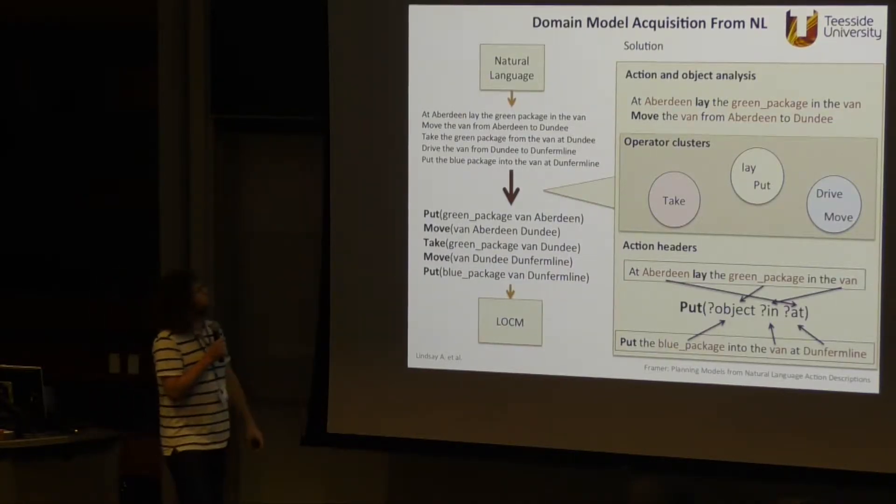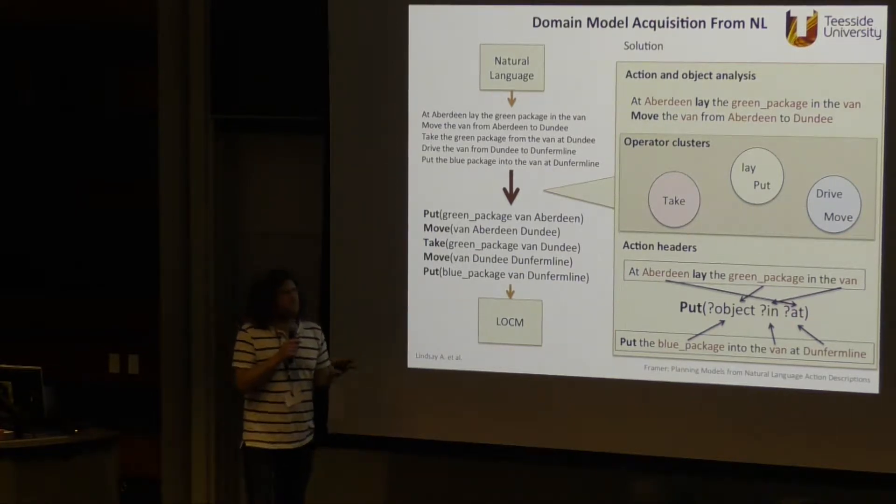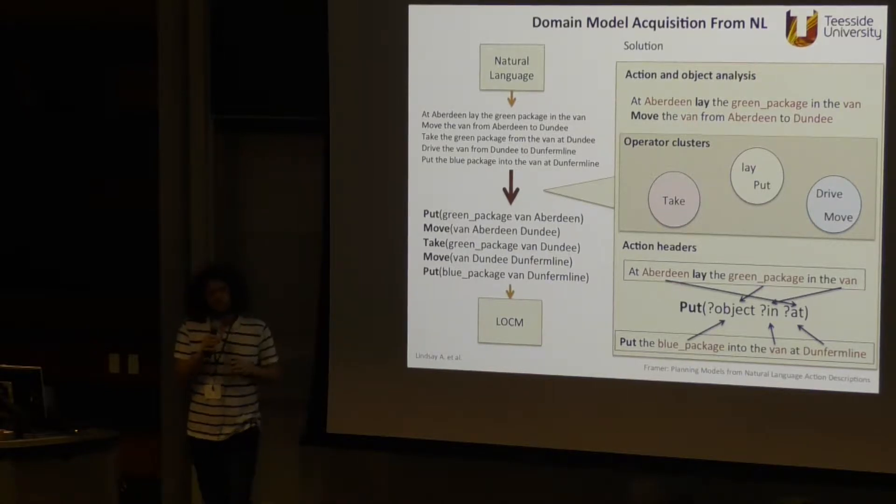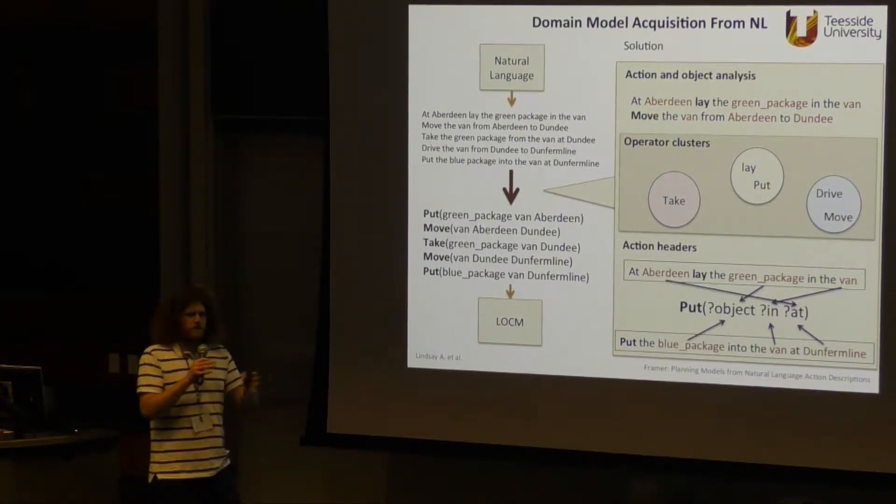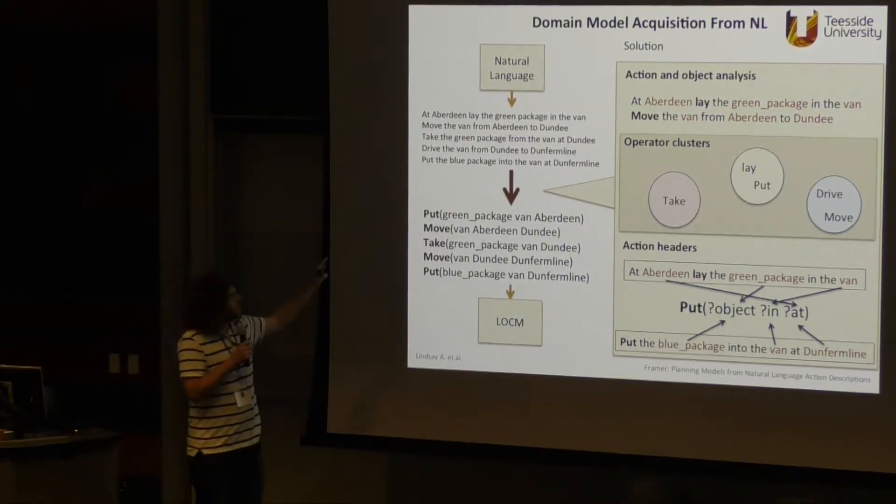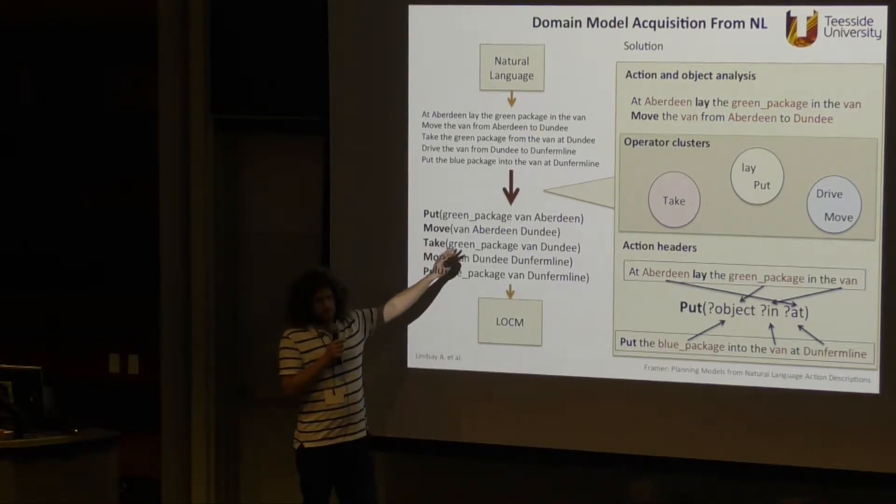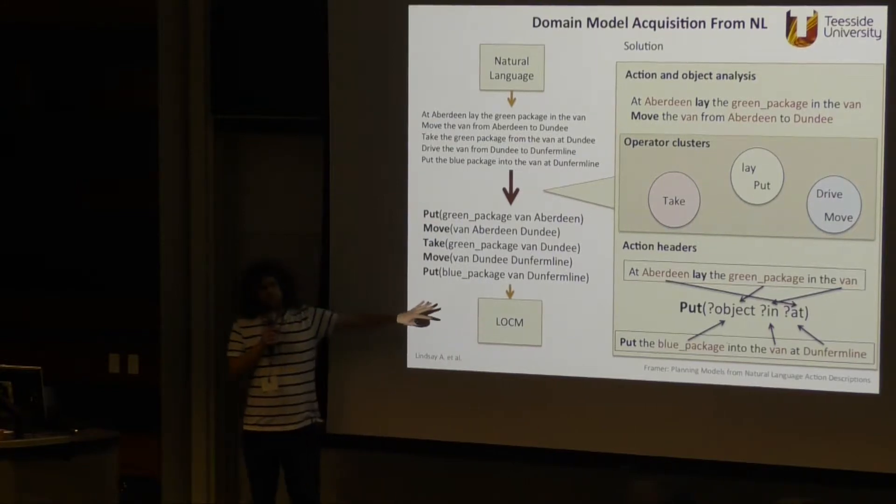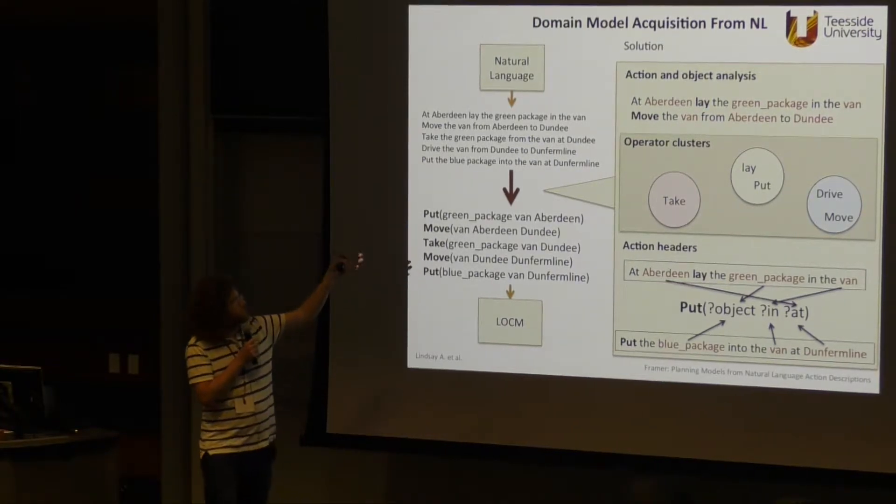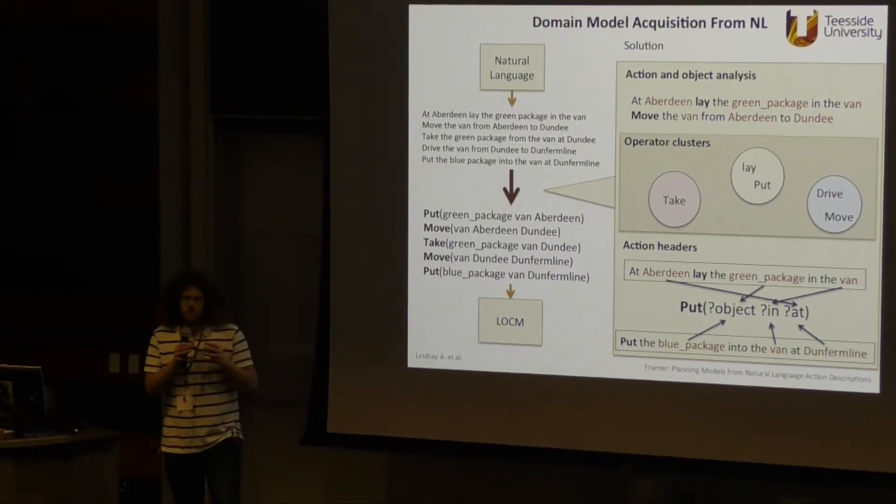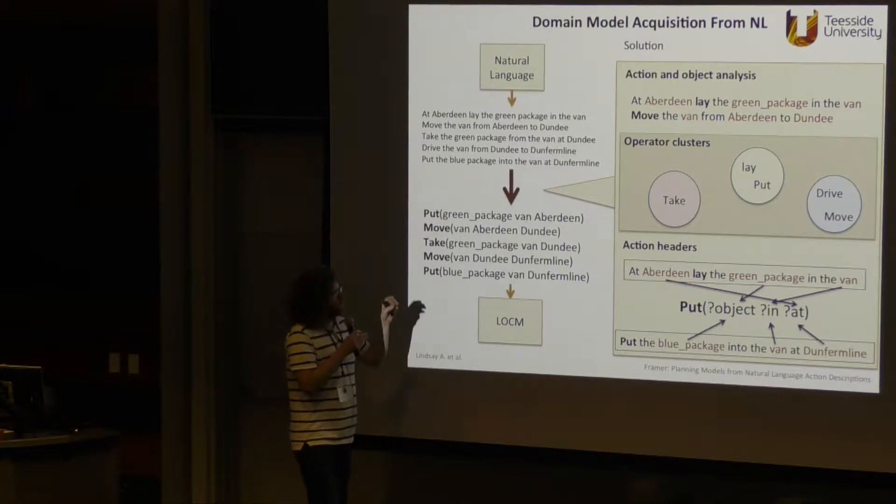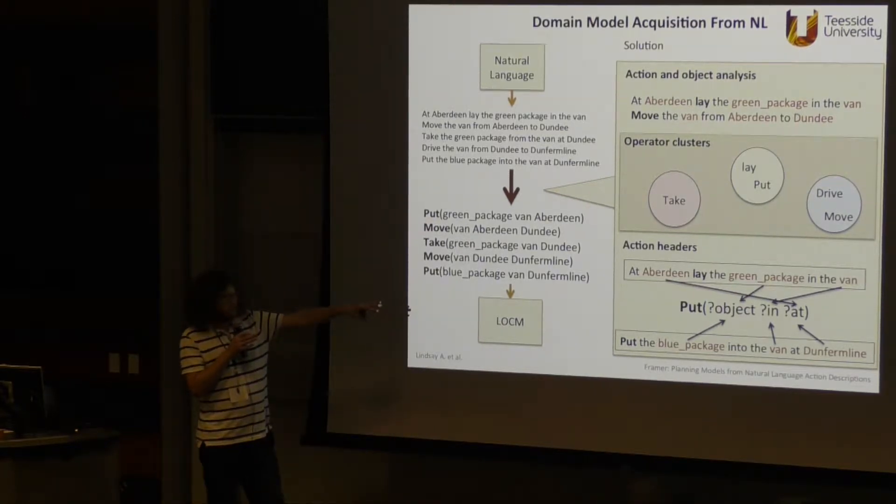So the approach is to run straight to LOCUM as soon as possible. In other natural language approaches what's quite often happened is that you start off with quite a lot of natural language processing. You try and build causality and relationships on the natural language side and then come across to a planning model. Here we're going to take this direct approach and exploit what's already happened in planning to first get to action headers and then use domain model acquisition to create the model.